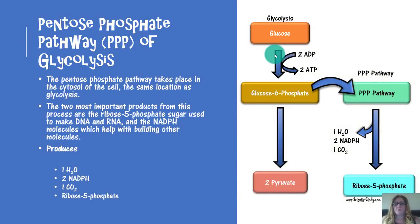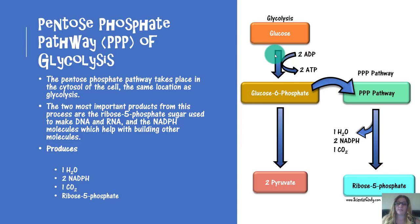The pentose phosphate pathway creates building blocks for amino acids and nucleotides. It takes place in the cytosol, the same location as other types of glycolysis. The two most important products are ribose-5-phosphate (used to make DNA and RNA) and NADPH, which helps build additional building blocks that go on to build other macromolecules.